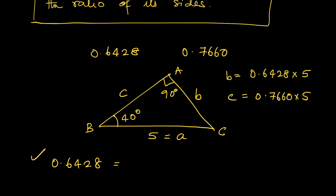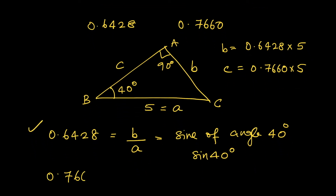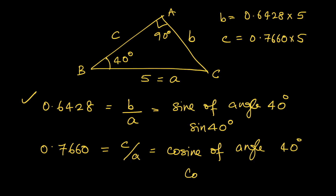The numbers in these tables have special names. The number 0.6428 is the ratio between the side opposite the 40-degree angle and the hypotenuse — that is, the ratio b/a — and it is called the sine of 40 degrees, written as sin 40°. Similarly, the number 0.7660, which is the ratio c/a, is called the cosine of 40 degrees, written as cos 40°. In the next video, we are going to discuss all these ratios — which we will call trigonometric ratios — in detail.